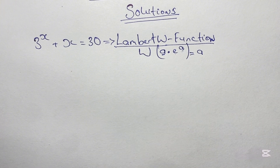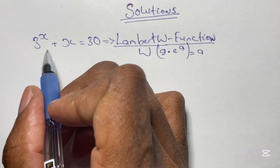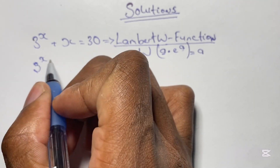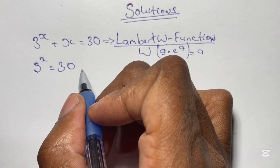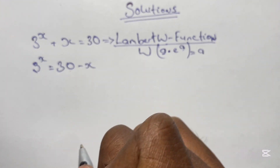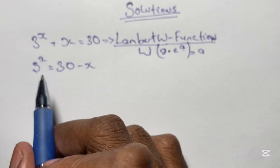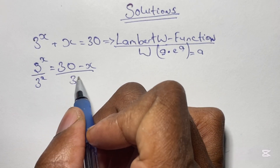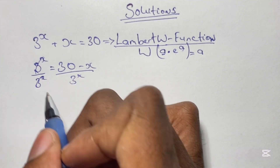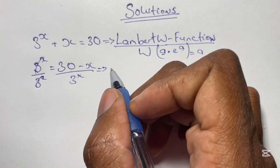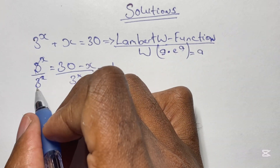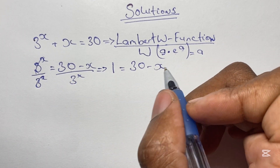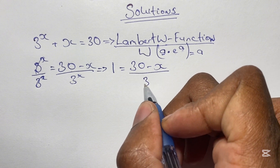We will write our equation in that form and then apply the W function, or product log function. We start by rewriting our equation as 3 to the power of x is equal to 30 minus x, bringing the x to the right-hand side. Then we remove 3 to the power of x to the right-hand side by dividing both sides by 3 to the power of x. So 3 to the power of x divided by 3 to the power of x gives us 1, leaving us with 1 is equal to (30 minus x) over 3 to the power of x.